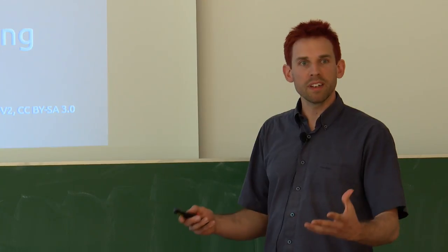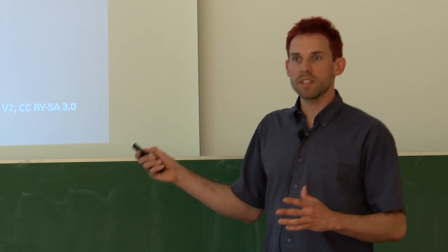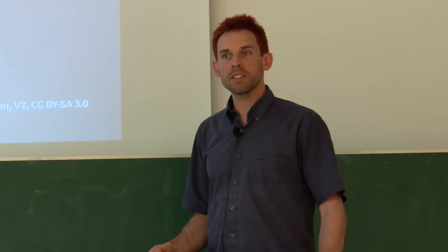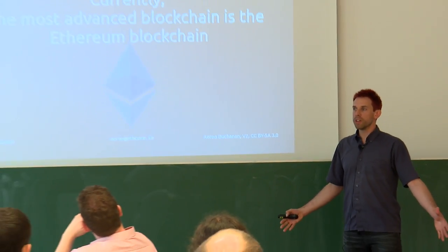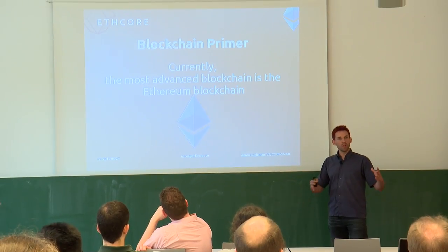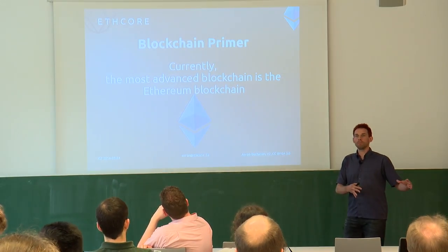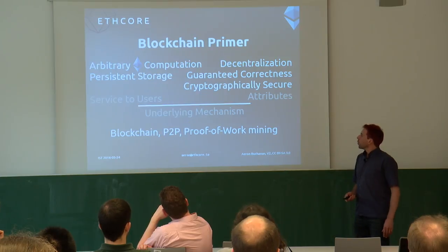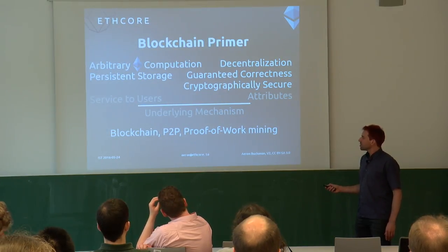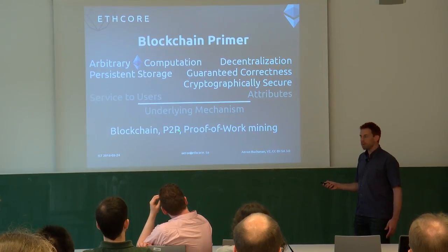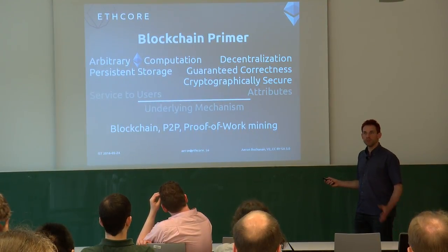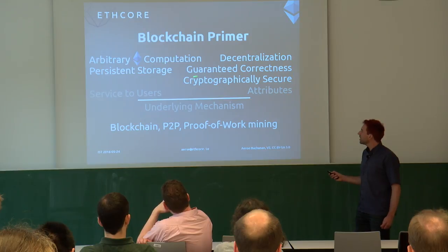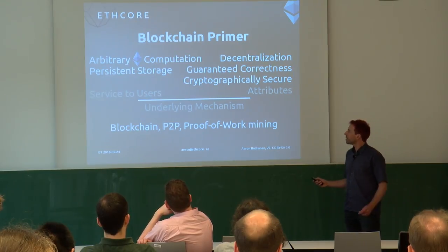Ethereum is more advanced in many respects. It was developed from scratch — not based on the Bitcoin code base at all. While it shares the same underlying mechanism — it is a blockchain, it is peer-to-peer, it uses proof of work to secure the platform — it has the same properties of decentralization, guaranteed correctness, and cryptographic security.